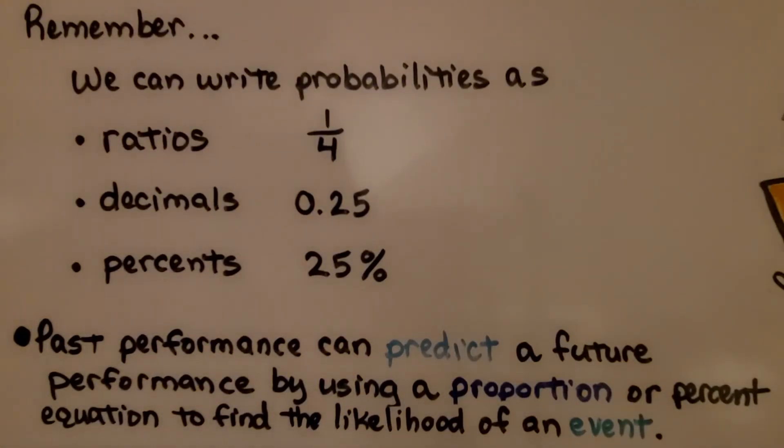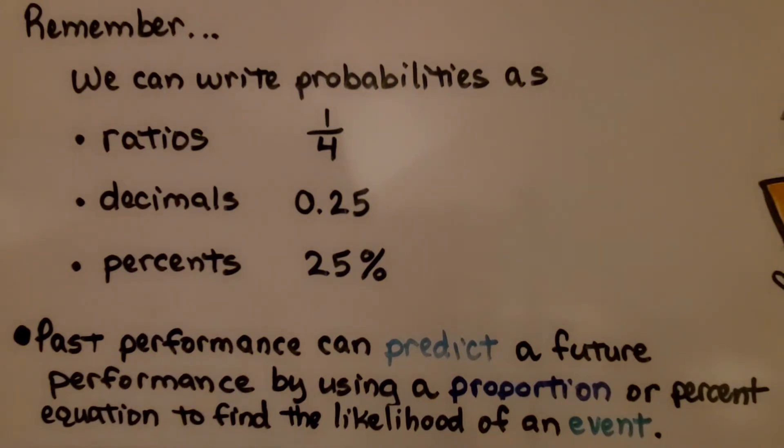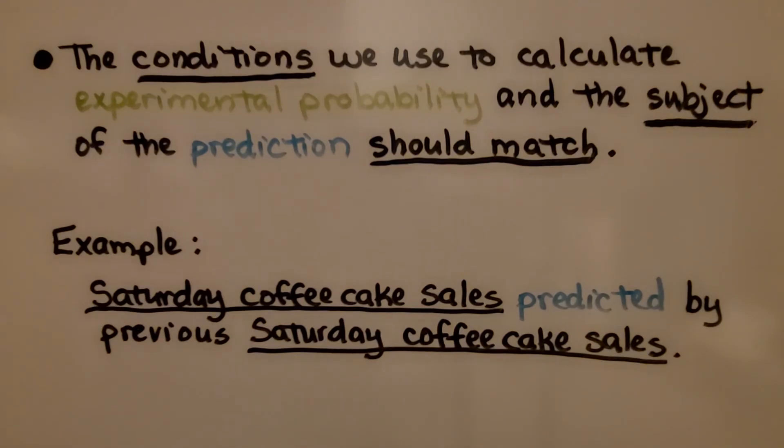Remember, we can write probabilities as ratios, decimals, or percents. And past performance can predict a future performance by using a proportion or percent equation to find the likelihood of an event. The conditions we use to calculate experimental probability and the subject of the prediction should match. For example, Saturday coffee cake sales predicted by previous Saturday coffee cake sales. The conditions and the subject match. We can't predict Saturday's coffee cake sales by Sunday's muffin sales.